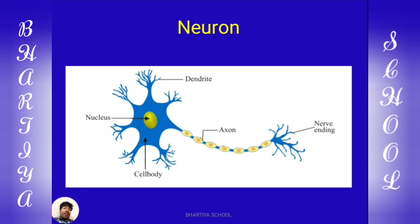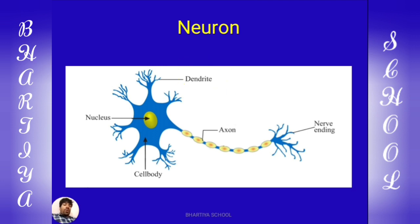The main function of dendrites and cell body is to receive chemical signals. Dendrites receive chemical signals and pass them to the cell body.